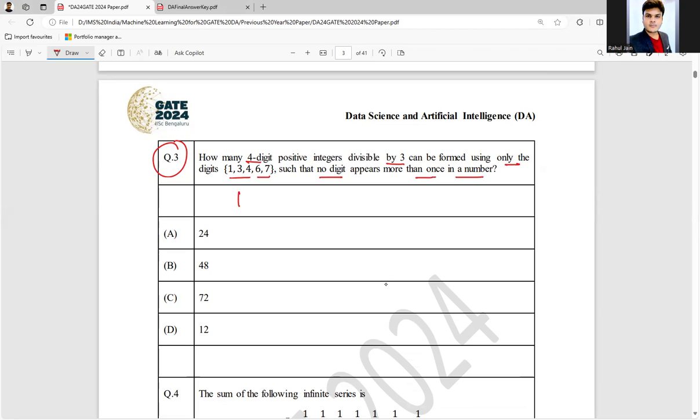So these digits are given. So let's add them: 1 plus 3 plus 4 plus 6 plus 7. If you are going to add them, 4 plus 4, 8 plus 6, 14 plus 7, 21 which is divisible by 3.